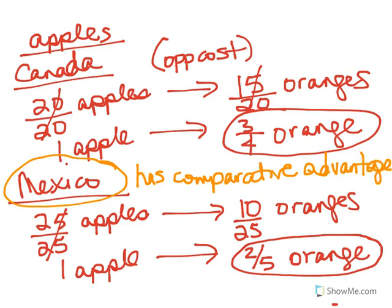So if these two countries were to specialize, Mexico would be the one to produce apples. We can also see from this what they would need in order to trade. If Mexico gives up two-fifths of an orange for every apple it produces, that means Mexico can either produce one apple or two-fifths of an orange. Therefore, if Mexico is going to trade apples for oranges with Canada, they would need to get more than two-fifths of an orange for every one apple they trade, because there always have to be gains from trade.